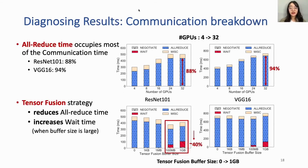Here are the diagnosing results. All-reduce time occupies most of the communication time — 88% in ResNet-101 and 94% in VGG due to larger parameter sizes. A large amount of communication leads to long all-reduce time. For tensor fusion, varying the buffer size from 0 to 1 GB shows that larger buffer sizes reduce all-reduce time — for ResNet-101 decreased by almost 40% — but also increase wait time. The scheduling strategy of tensor fusion can efficiently reduce communication time and improve scaling performance.